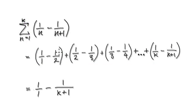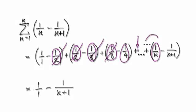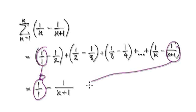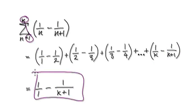Now if you look at this, this fraction will get cancelled out. These two will cancel each other out, and then this one here will cancel out with this one. This one here will cancel out with this next term, and this one here will cancel out with the previous one. So as it turns out, all that you are left with is this thing, and then this thing here.